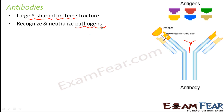Antibodies recognize and neutralize pathogens. Pathogens are the disease-causing organisms. Now here you can see something called antigens. What are antigens? Pathogens are a type of antigen. An antigen is any foreign substance that can attack the body or cause diseases in the body. So pathogen is just one example of an antigen.